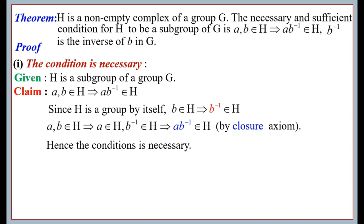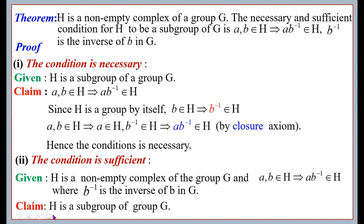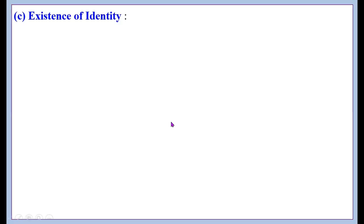This completes the first part of the theorem. Now for the second part — the sufficient condition, or the 'only if' part. Here we are given that H is a non-empty complex of group G, and a, b ∈ H implies ab⁻¹ ∈ H, where b⁻¹ is the inverse of b in G. We have to show that H is a subgroup of G, meaning H must satisfy closure, associativity, identity, and inverse axioms.